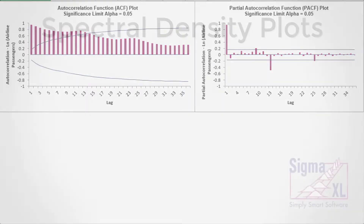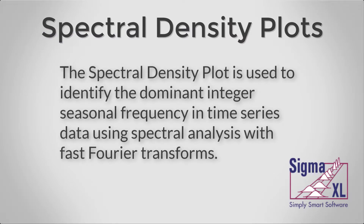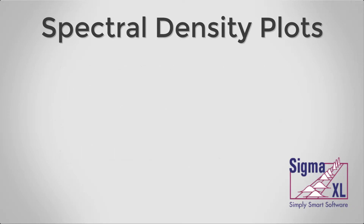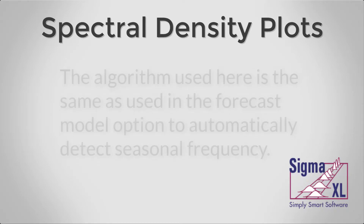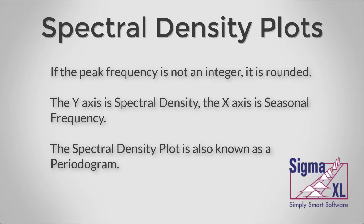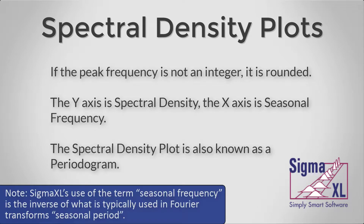Now we will look at spectral density plots. The spectral density plot is used to identify the dominant integer seasonal frequency in the time series data using spectral analysis with fast Fourier transforms. The algorithm used here is the same as used in the forecast model option to automatically detect seasonal frequency. If the peak frequency is not an integer, it is rounded. The y-axis is spectral density and the x-axis is seasonal frequency. The spectral density plot is also known as a periodogram.